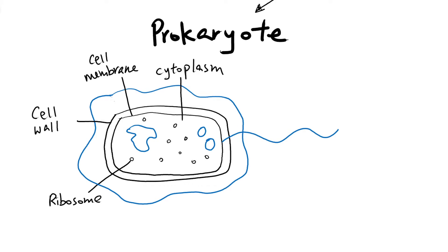Now let's look at a few structures that are quite unique to prokaryotic cells. First, we have this big loopy structure called the circular DNA. As mentioned, prokaryotic cells don't have a nucleus, but they do have DNA inside them so they can code for the different types of proteins needed. The circular DNA is found inside the cytoplasm.